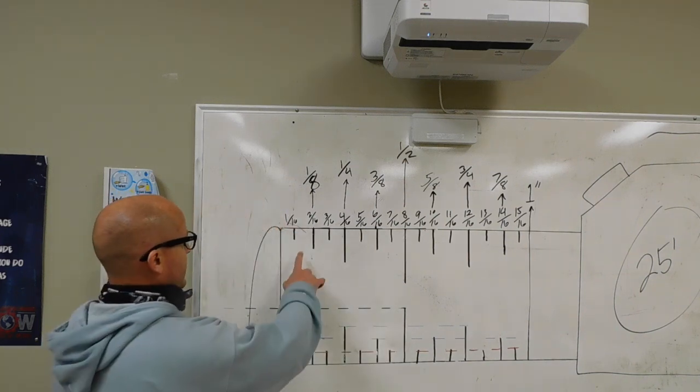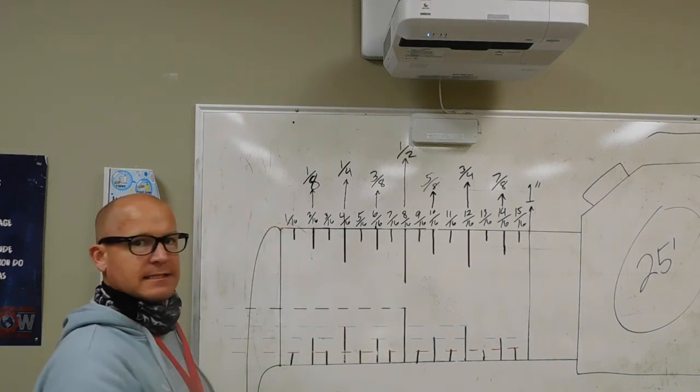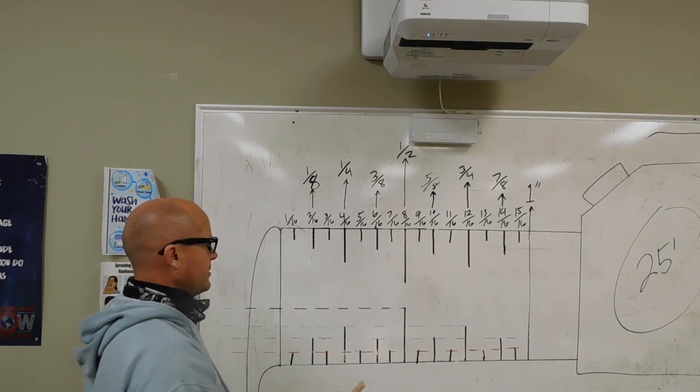So that's the way if you wanted to count each one of these lines, it would be a sixteenth and then you reduce the fraction to its lowest terms.